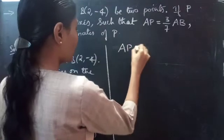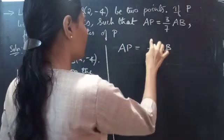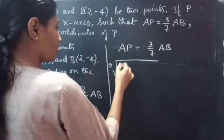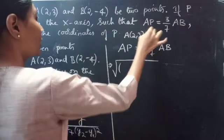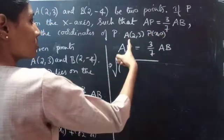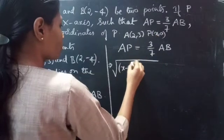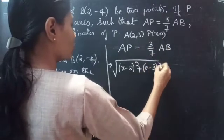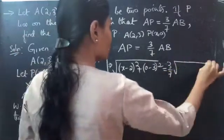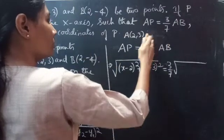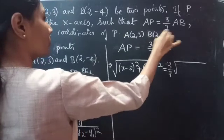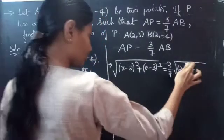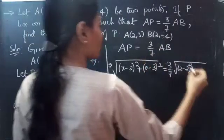Let's consider the condition AP equals 3/7 times AB. This implies: square root of — with A(2, 3) and P(x, 0) — (x minus 2) squared plus (0 minus 3) squared equals 3/7 times the square root of (2 minus 2) squared plus (-4 minus 3) squared.